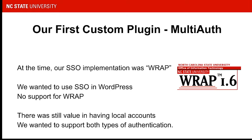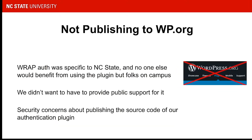We also wanted to keep the local WordPress username and password authentication for people without RAP. We very early on decided not to publish this on WordPress.org — the main reason being that no one else was ever going to use it. And we felt nervous about publishing the source code for our authentication plug-in out on the open web. So we decided we're not going to publish it, we'll just handle the deployments manually. What could go wrong?